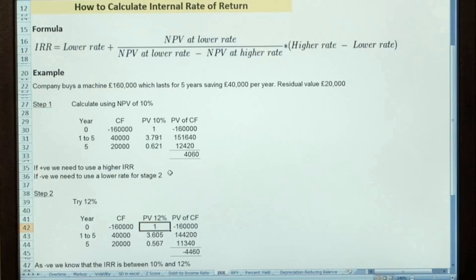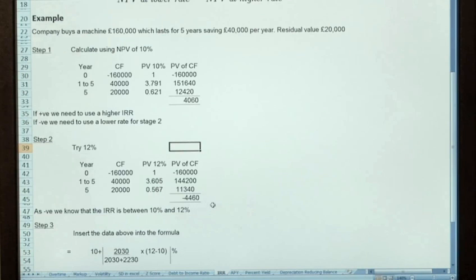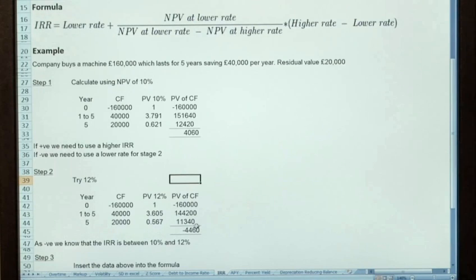Now you'll see that the present value, or the discount factors have changed here and that's obviously because we've gone up to a 12% rate and you'll see that we've got a negative outcome of -£4,460. So as we've now got a negative here and a positive here I know that the internal rate of return will be at a point between 10% and 12% because that's the only place where the NPV will be zero.